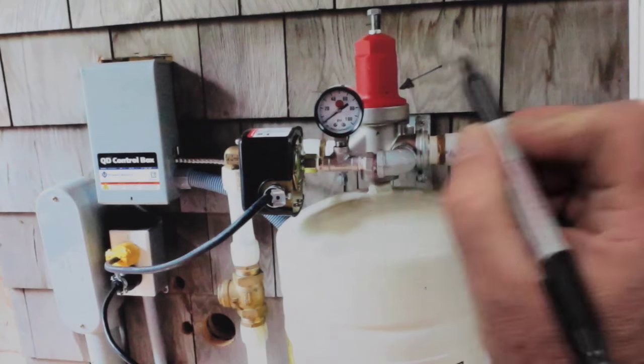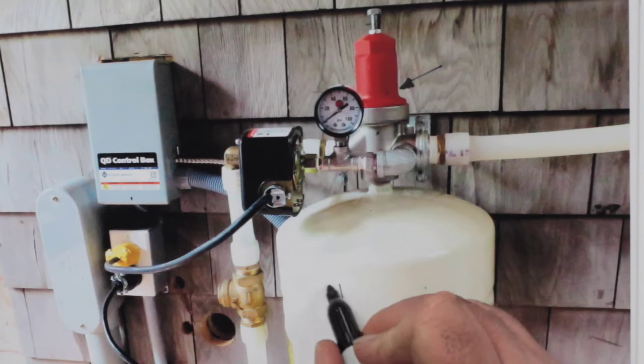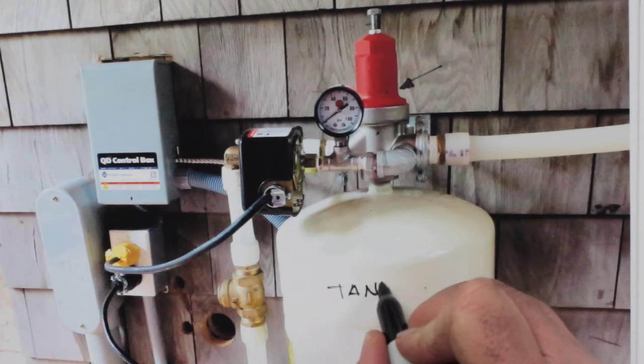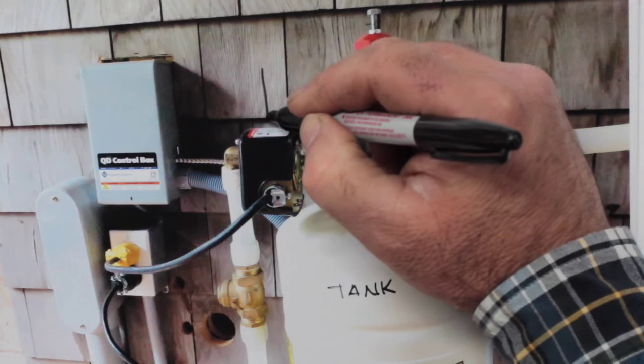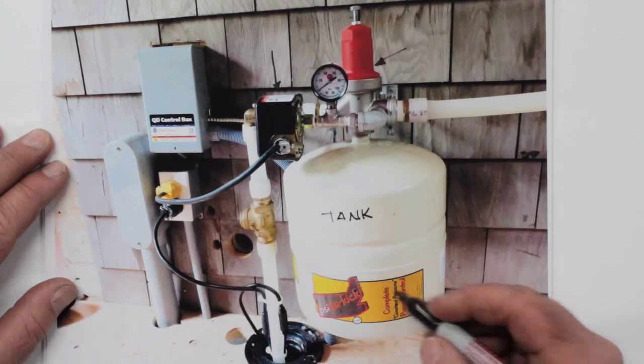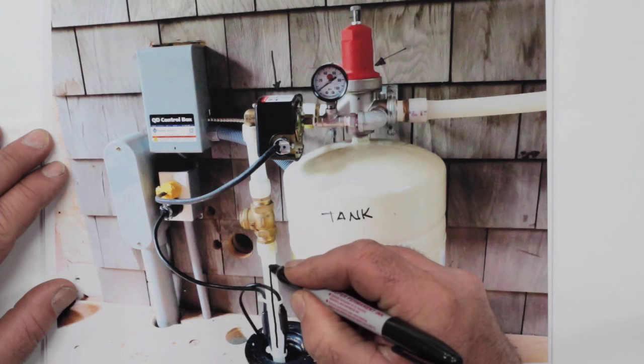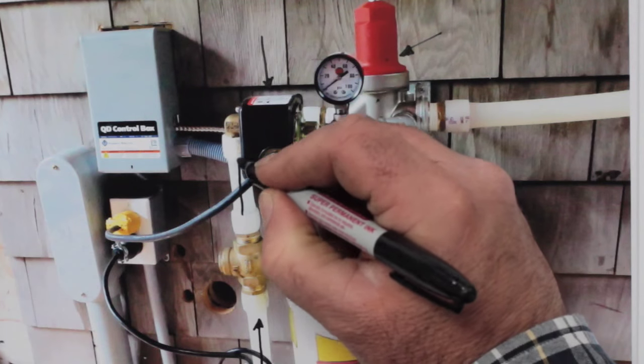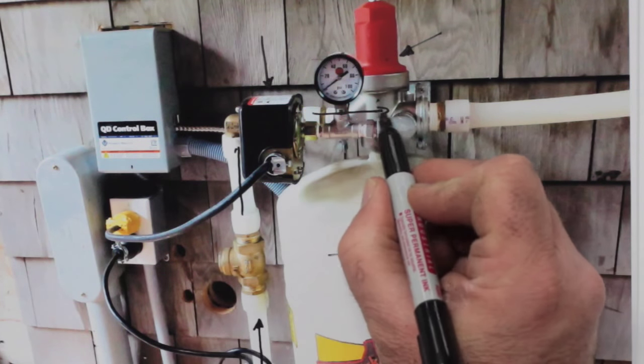That's the cycle stop valve right there. This is the pressure tank. Notice how small it is. It can be very small with this system and that's the pressure switch I was telling you about. This is the incoming water line. Water flows through this white pipe, through the valve and then onto the house.